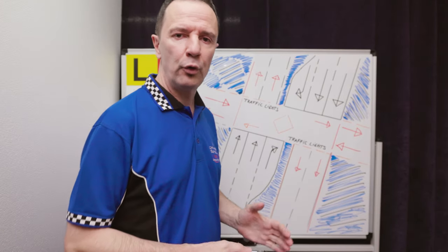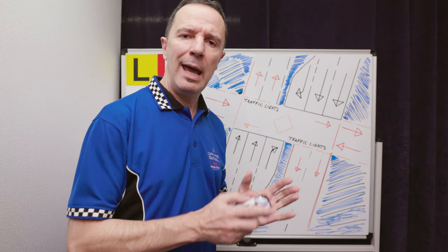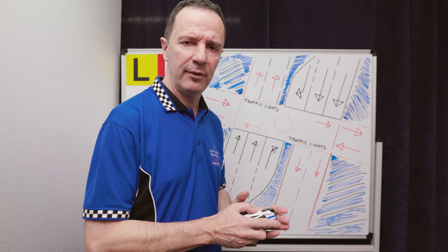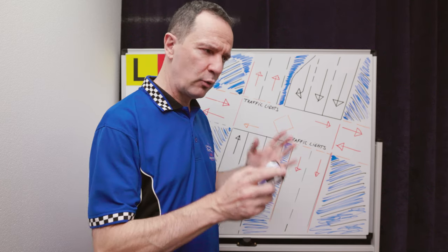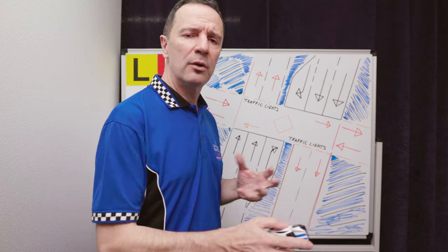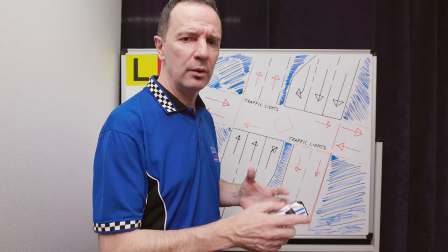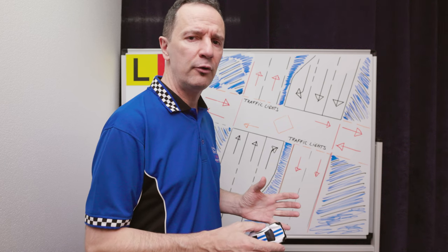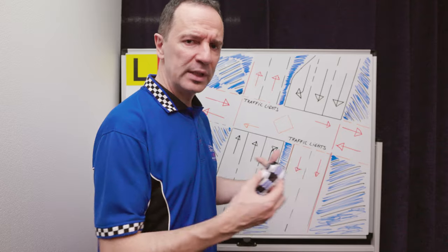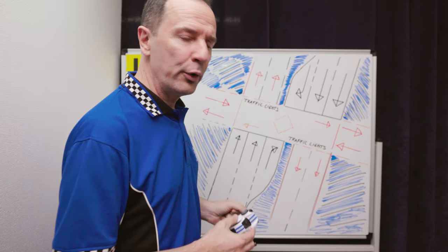Welcome to Driving School WA Tutorials. In this short video I'm going to demonstrate how to turn safely at a major intersection without the green arrow. I'm talking about the intersection where there's a green light and potentially a green arrow that changes to red, or stays red, and then at some point the red arrow drops and you've got the single green light where you've got to give way to the opposite direction, like in this drawing here.